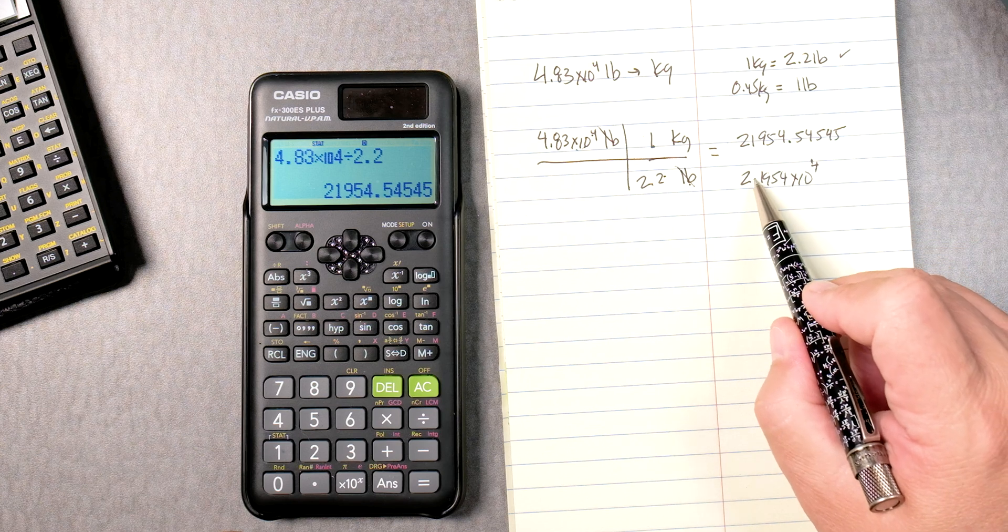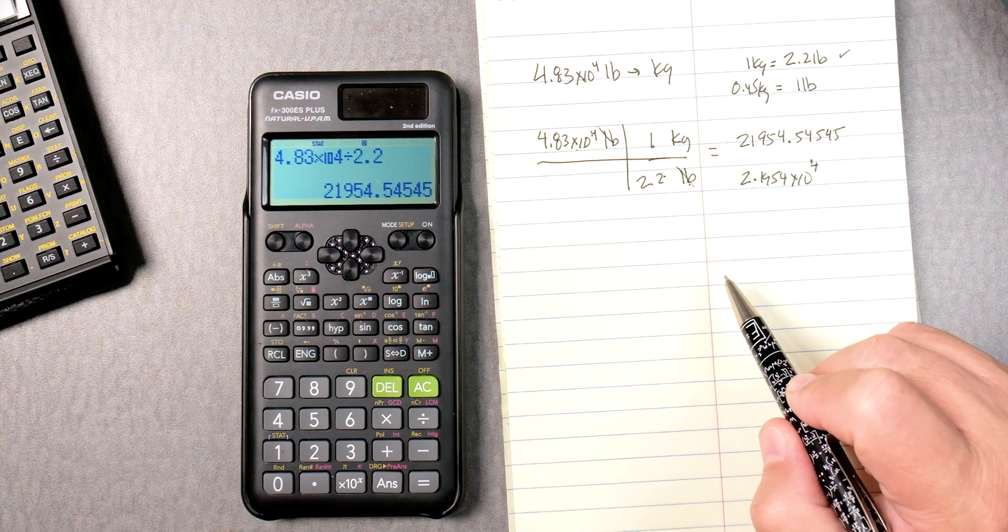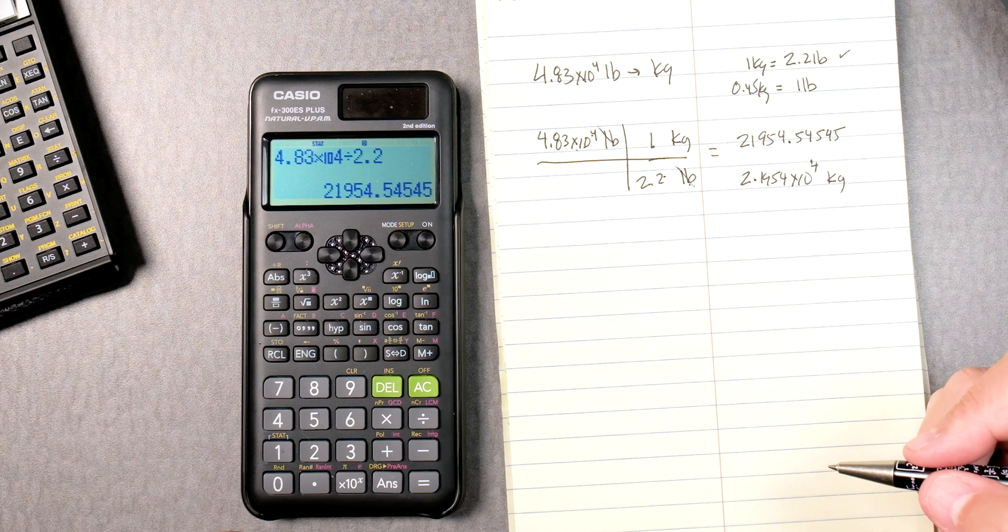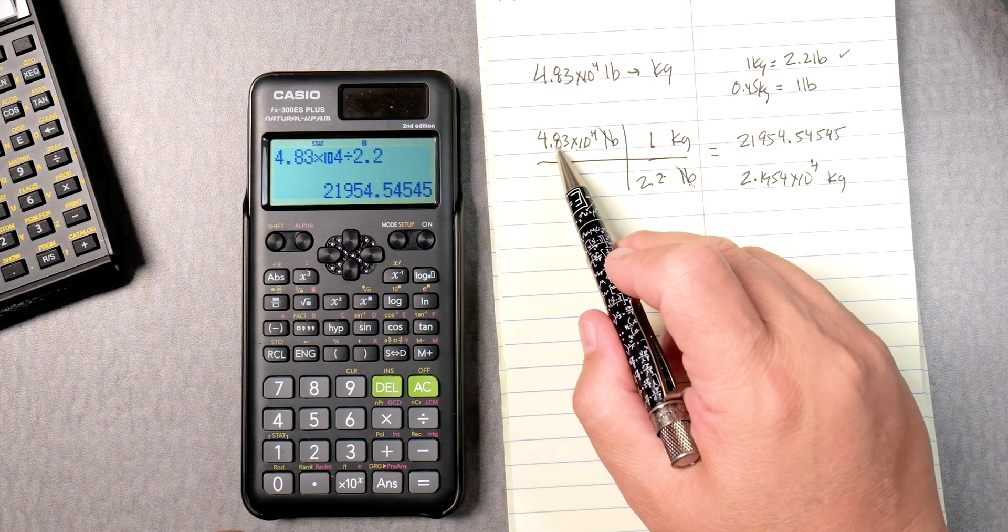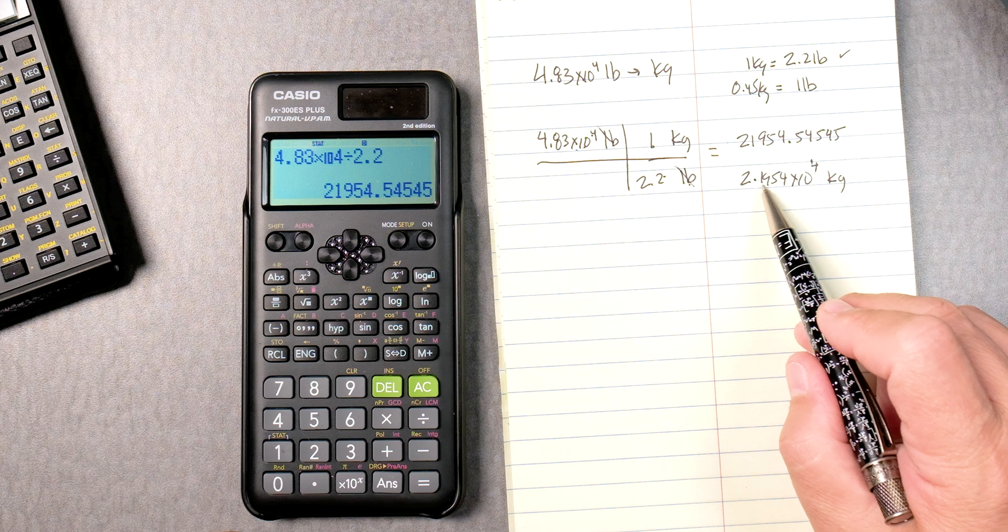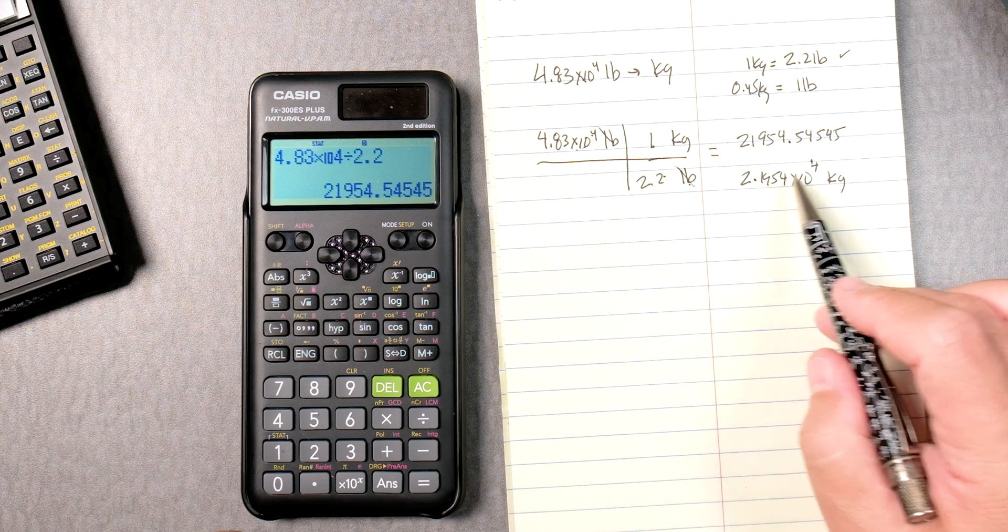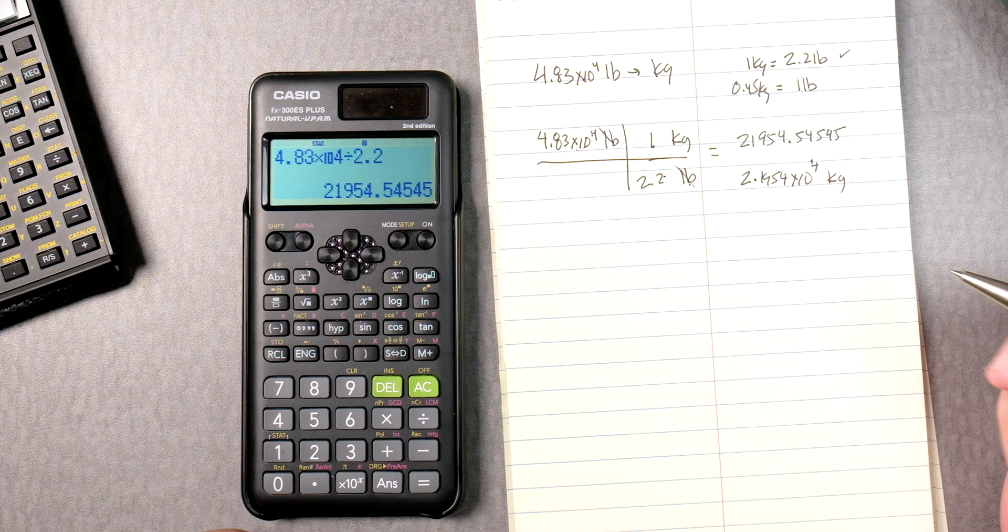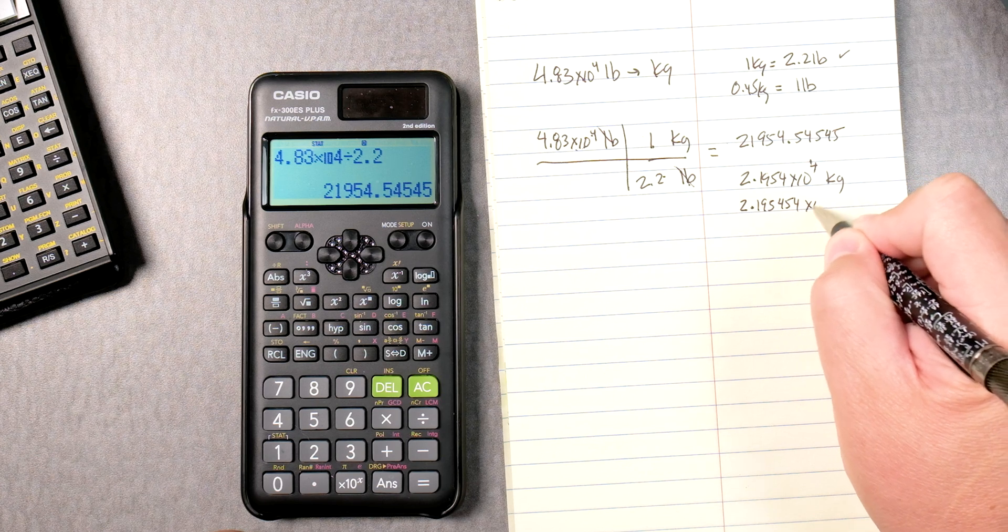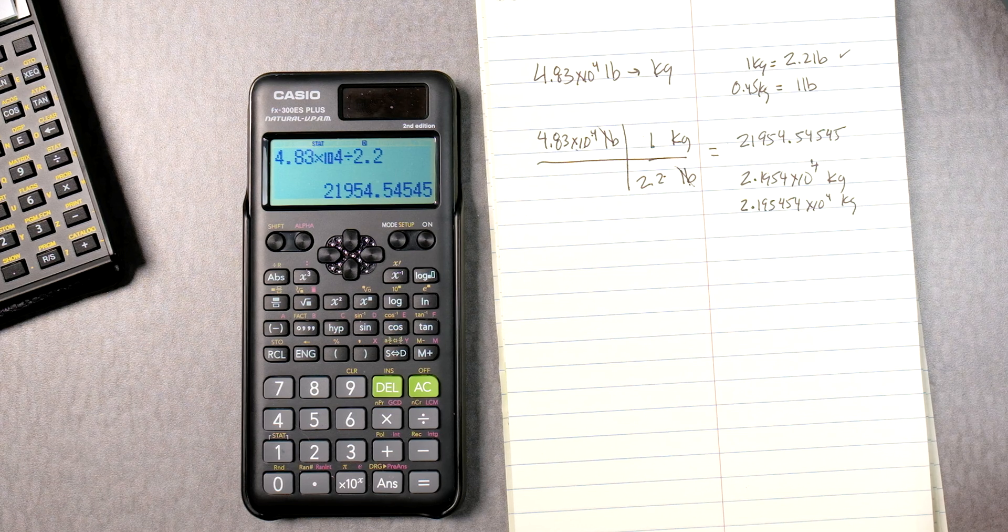So, 1, 2, 3, 4. We'll move back to decimal. And these will be in kilograms. So, 4.83 times 10 to the fourth pounds is the same thing as 2.1954 times 10 to the fourth power. Now, how many significant digits you write out, that's going to be up to your teacher. You could have said 2.1954 times 10 to the fourth kilograms if you wanted to. Those are details you have to speak to your teacher with.